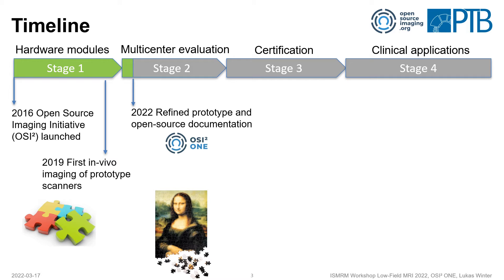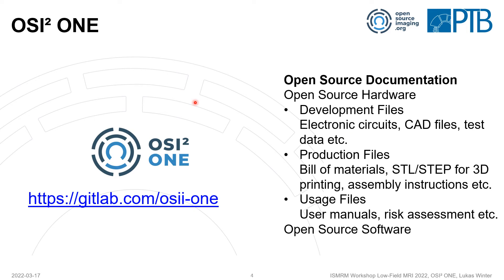These puzzle pieces are finally coming together and we can start working on a single system and communicating in one direction, by performing a multi-center evaluation of these systems and further improving them together. All the files of OZ1 will be available under the repository link shown here. By open source documentation we mean all the development files needed to further improve the system, such as electronic circuits and cut files, as well as assembly instructions, bill of materials, and all the software and usage files needed to operate the system.